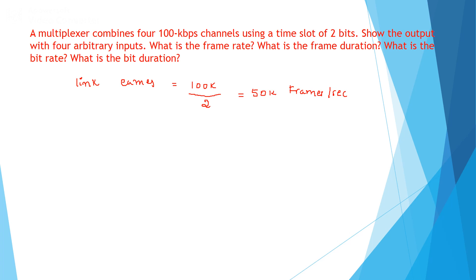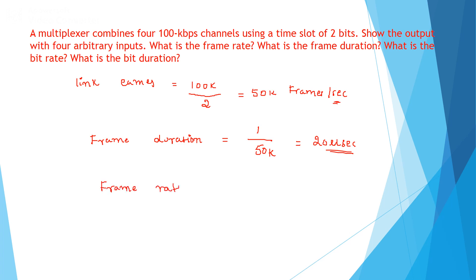Next, we compute frame duration. Since 50,000 frames can be transmitted in 1 second, the duration per individual frame is 1/50,000 = 20 microseconds. The frame rate is 50,000 frames per second because each time slot carries 2 bits.